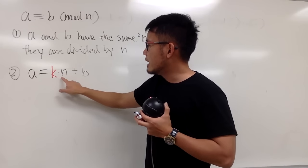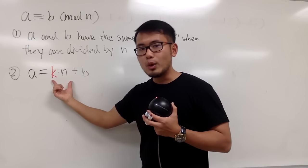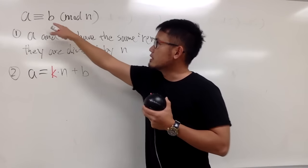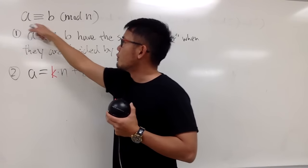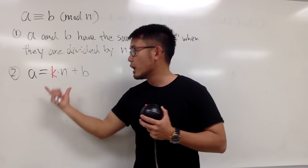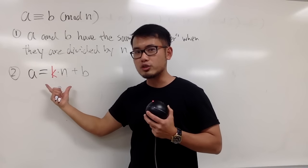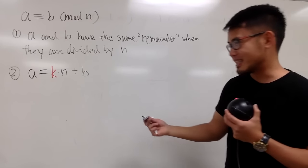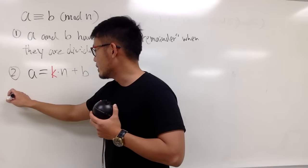When you have k times n mod n, this is always going to be a multiple of n, so it becomes zero in the mod n world, and then you're left with the b right here. So sometimes it may be helpful when you go from here to here, because from here you're working with an equation rather than a congruence. So that's another way to use this notation—another way to interpret, another way to approach when you have a congruence.